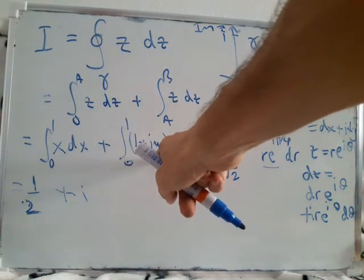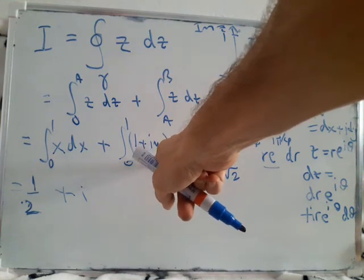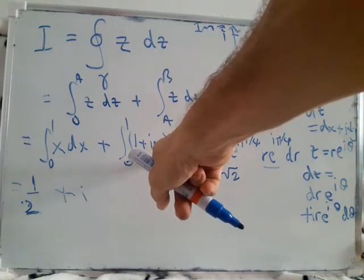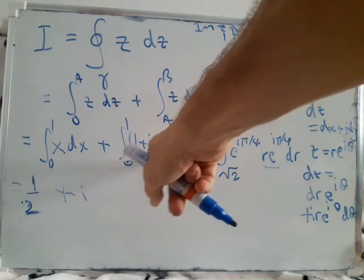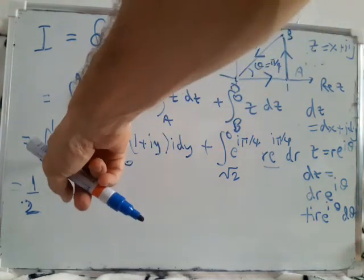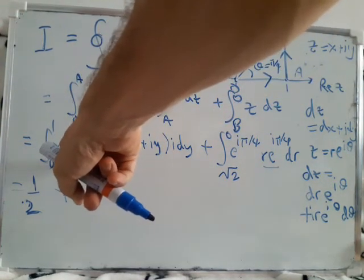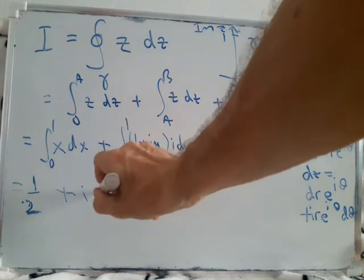Then i times i is minus 1. So we have minus y. Minus y integrated from 0 to 1 is the same as integrating x from 0 to 1. So that gives us minus 1/2.